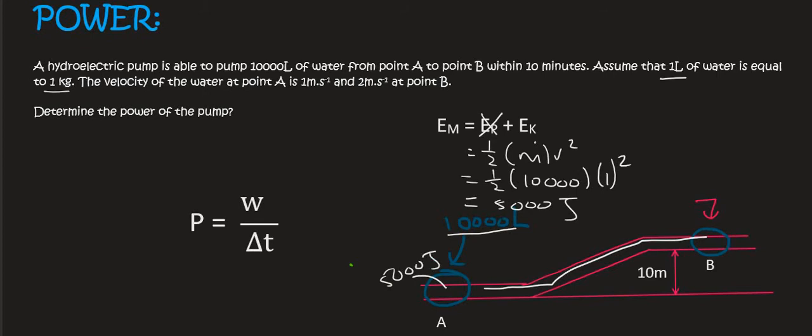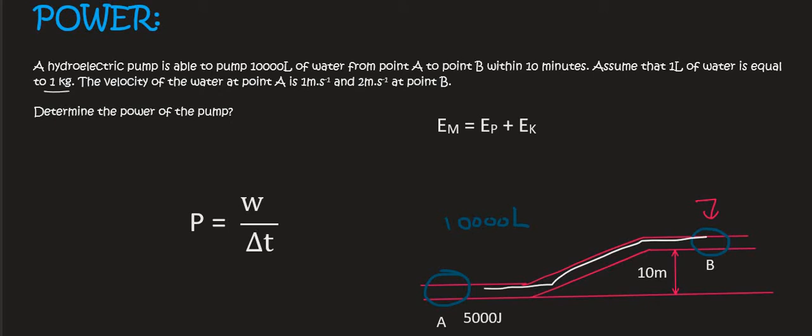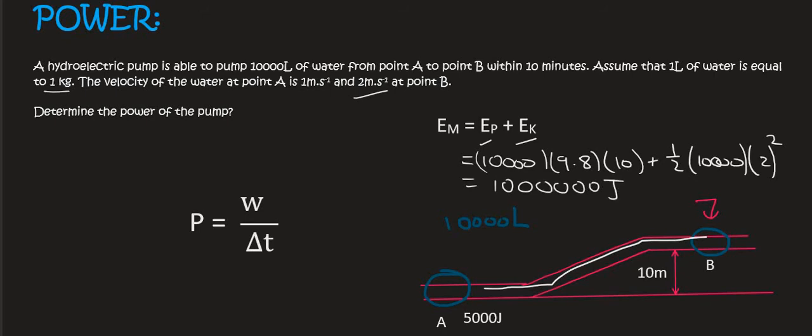Now let's work out the energy at B. So at B it's got potential energy and kinetic energy. So the potential energy is mgh, so it's 10,000 kilograms of water, 9.8 is that, and then the height is 10. Then the kinetic energy is a half of the mass times by the velocity, which is 2 meters per second squared. So you type all of that in on the calculator and that gives us 1 million joules. So it has a million joules of energy at B and 5,000 joules of energy at A.